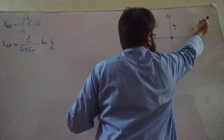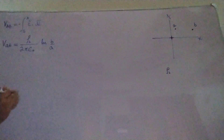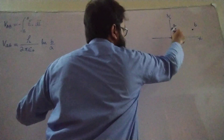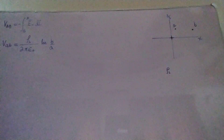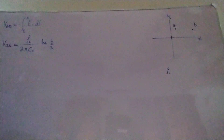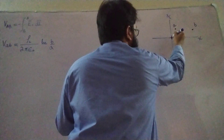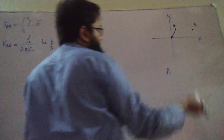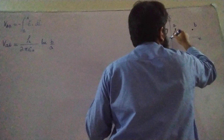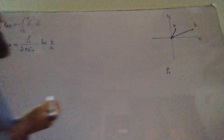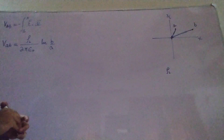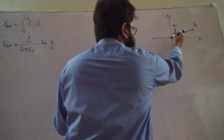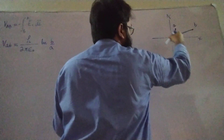This expression gives us the amount of work done in moving a unit positive charge from point B to point A in the presence of this uniform infinite line charge distribution located on the entire Z-axis given by rho L. In cylindrical coordinate system, small a is the radial distance of point A and small b is the radial distance of point B from the Z-axis.